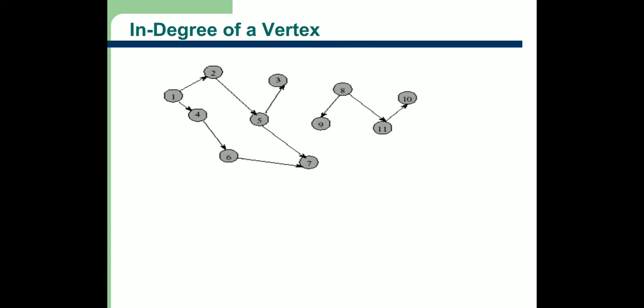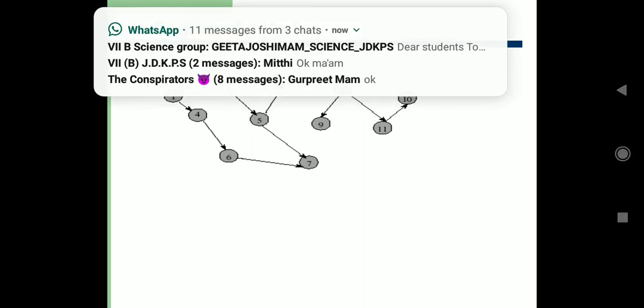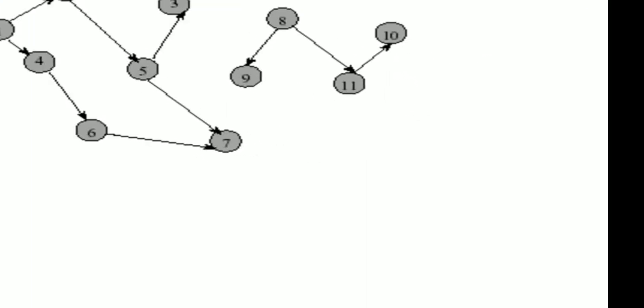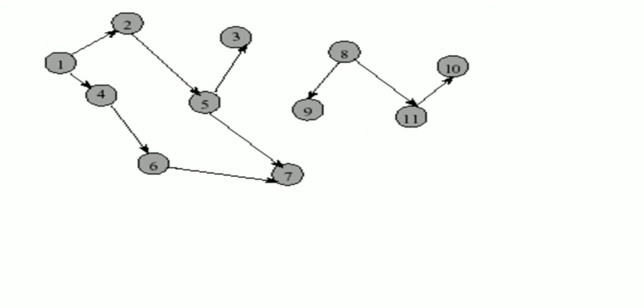Next thing is in-degree. When we talk about directed graphs, we have two types of degrees — in-degree and out-degree. In-degree means how many edges are incoming into a particular vertex. For example, node 5 has one edge coming in (2→5), so the in-degree of 5 is 1. But 2 edges go out from 5 — (5→3) and (5→7) — so the out-degree of 5 is 2. In-degree of vertex 8 is 0, since no edges come into 8.